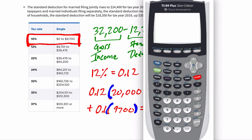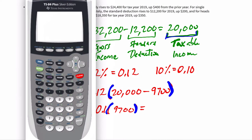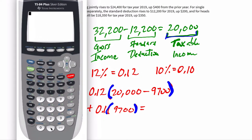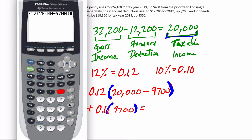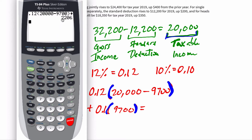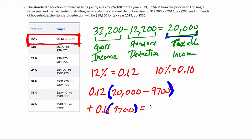Let's do the calculations. We want to find out what we're going to be paying in taxes. Using the calculator: 0.12 times the difference of $20,000 and $9,700, plus 0.10 times $9,700. This tells us the total amount we owe in taxes: $2,206.